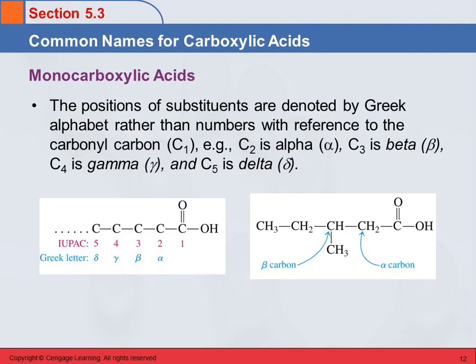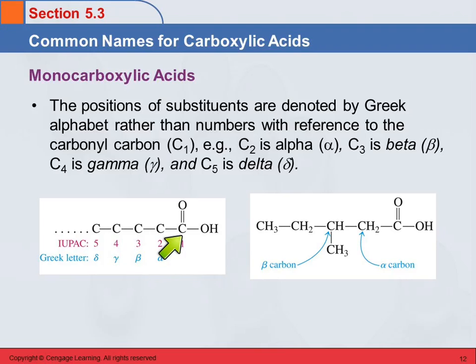One thing that's a little bit different with the common names: instead of numbering, they use Greek letters. And just to make matters worse, we always numbered with the carboxyl carbon as number one. Well, the Greek letters start on the second carbon. The reason for that is that you can't have a substituent on carbon number one — there's no room. It joins to the chain, and that's it.